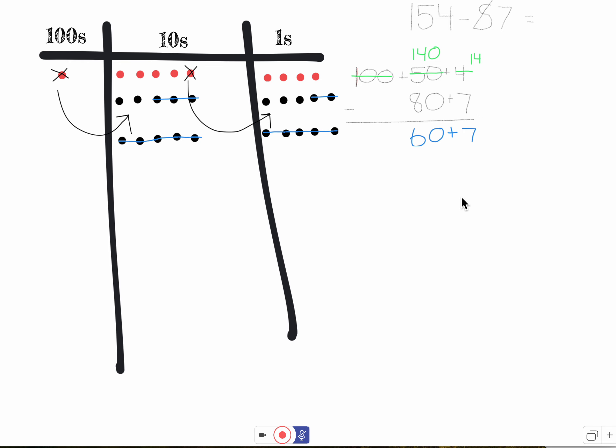Okay, so now I can put my tens and ones together. Six tens, seven ones, or sixty plus seven is sixty-seven.